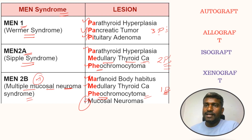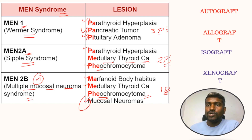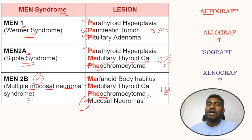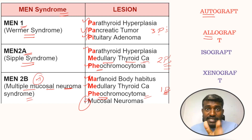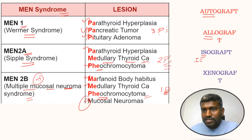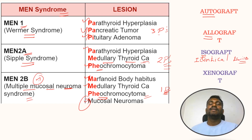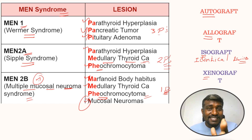Grafts are very important for the exam. Autograft — the word itself says 'auto' — is a graft from the same person. Allograft is a graft from a different person but the same species. Isograft — 'iso' — is from identical twins. Xenograft is a graft from a different species. Just this slide alone can fetch you one mark.